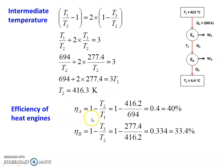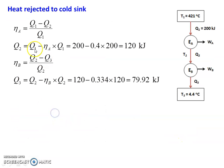Efficiency of the engines. Engine A: Eta A equal to 1 minus T2 by T1, which is 1 minus 416.2 divided by 694, equal to 0.4, that is 40%. Eta B equal to 1 minus T3 by T2, which is 1 minus 277.4 divided by 416.2, equal to 0.334, which is 33.4%. Then, heat rejected to the cold sink: Eta A equal to 1 minus Q2 divided by Q1. Rearranging, Q2 equal to Q1 minus Eta A into Q1. Q1 equal to 200, Eta A equal to 0.4, so Q2 equal to 200 minus 0.4 into 200 equal to 120 kilojoules.